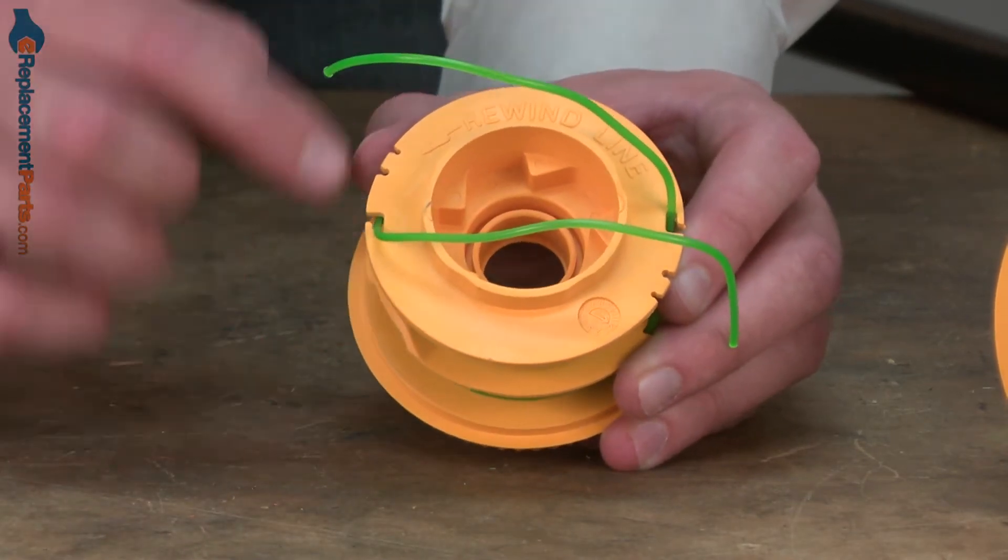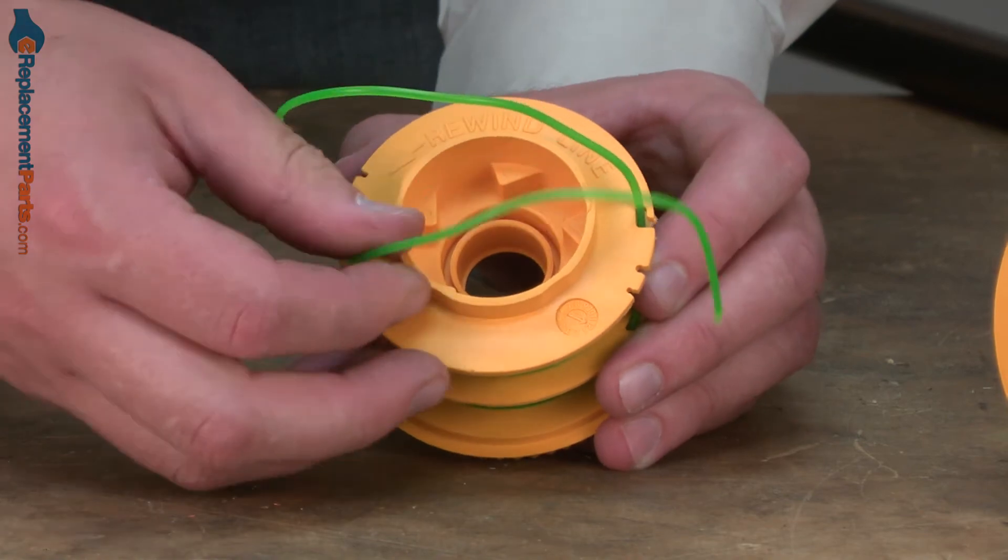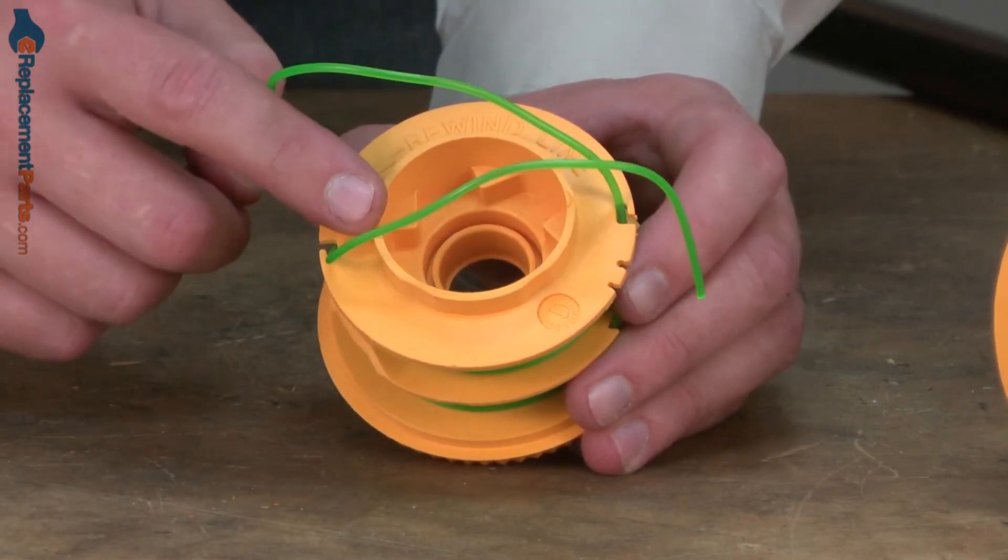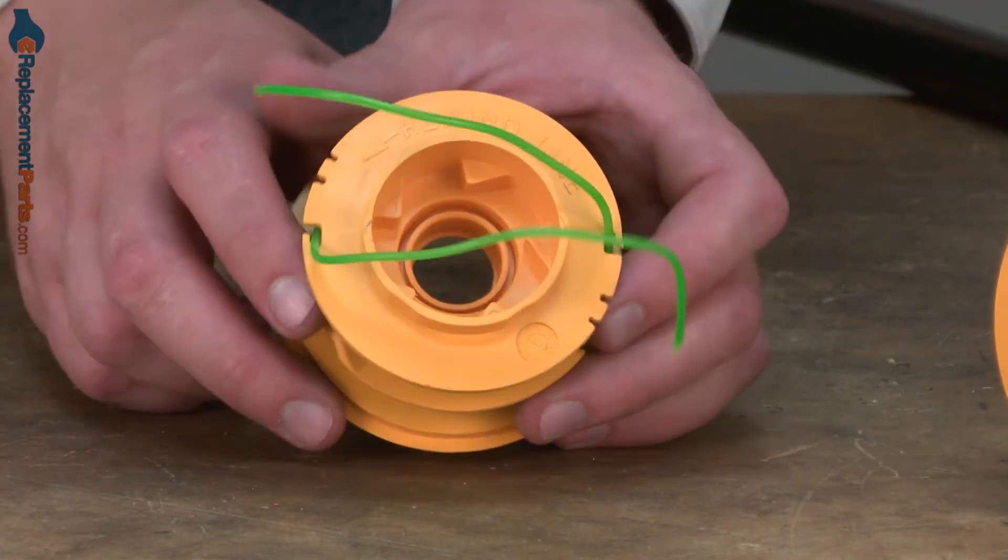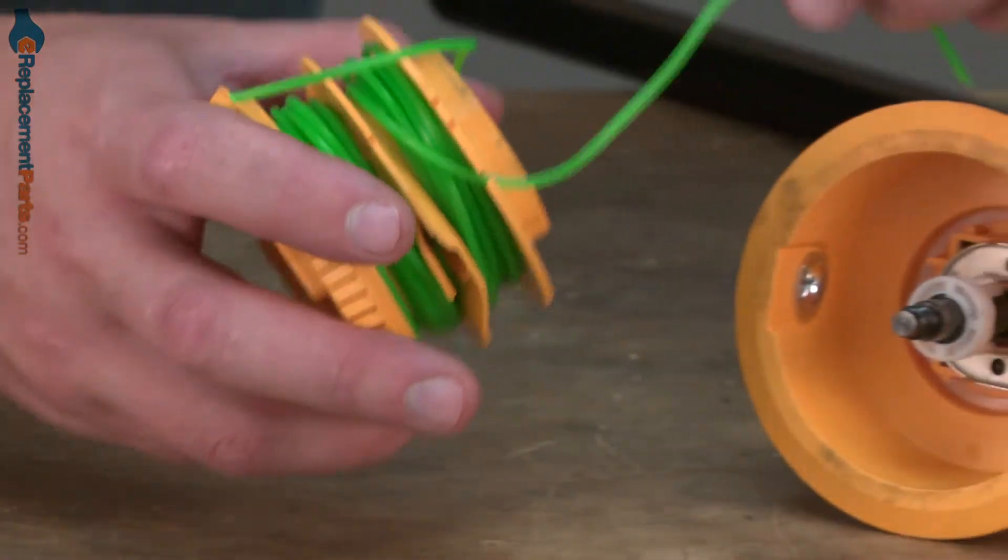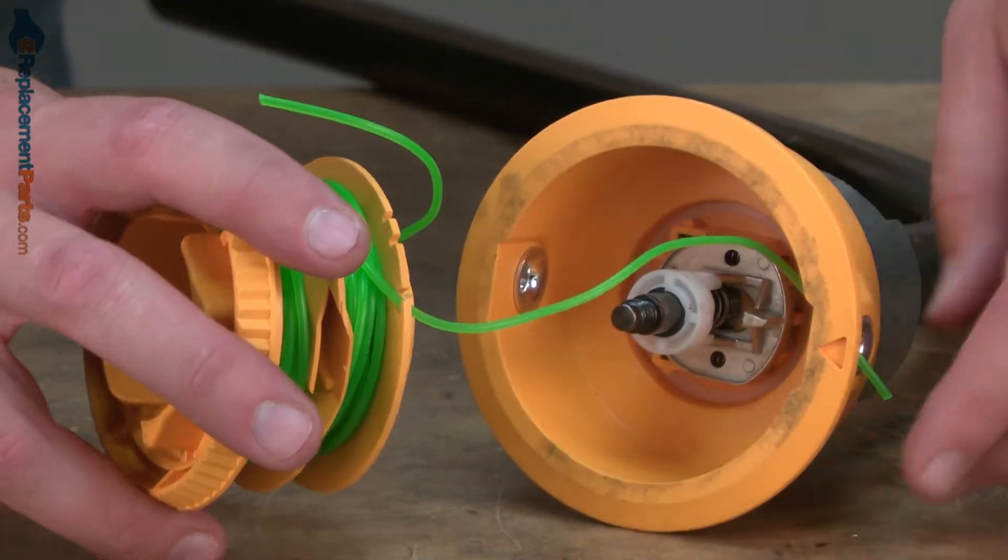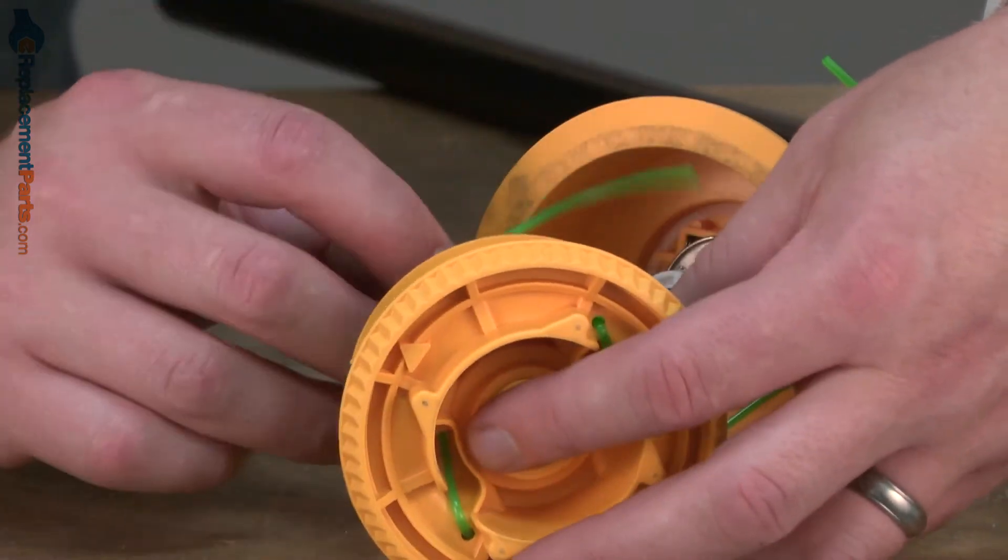You'll notice there's these clips on either side of the head and those are to temporarily hold the line while we insert the spool into the trimmer head. So I'll line up each of the trimmer lines with the eyelets on the trimmer head.